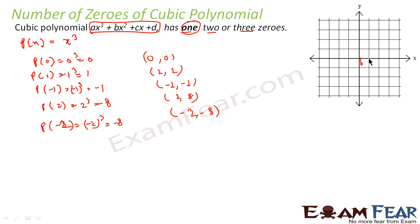Let's plot these points. On the x-axis we mark 0, 1, -1, 2, -2. On the y-axis, the values go from 1 up to 8, and on the negative side from -1 down to -8.